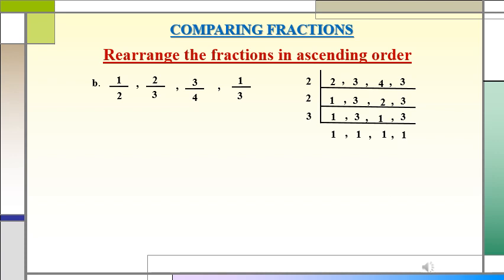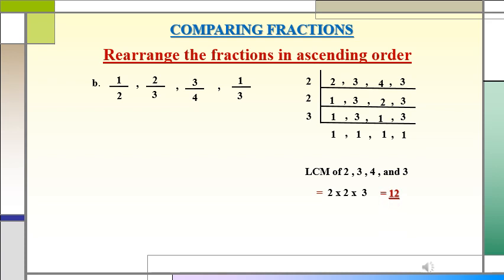Now we have got the LCM of the denominators as 2 multiplied by 2 multiplied by 3, which is equal to 12. We have to convert the given fractions into equivalent fractions with the denominator 12.